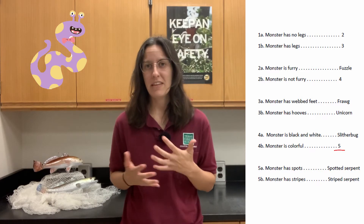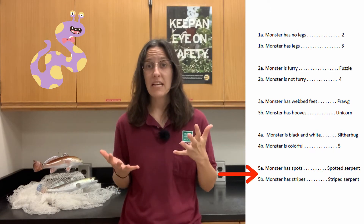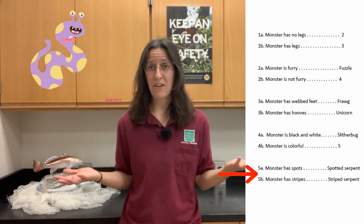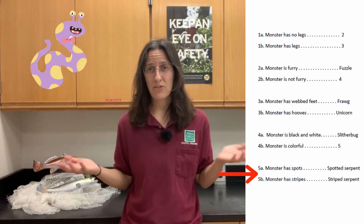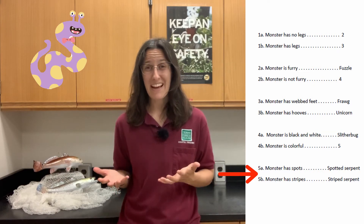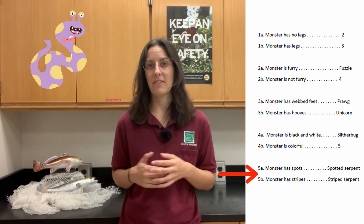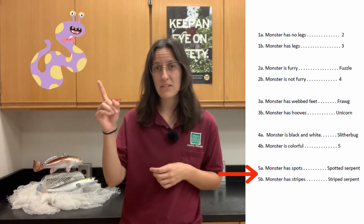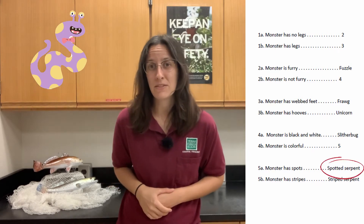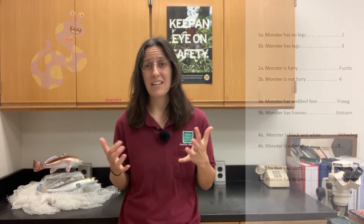From here, the key is telling us to move on to step five. Step five is asking us to look at the pattern. What kind of pattern do you guys see on our monster? He's got a lot of spots. So it looks like we finally found our answer — this little monster is a spotted serpent. Congratulations guys, we just identified a monster using a dichotomous key.